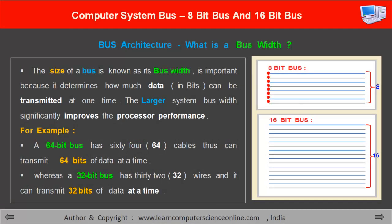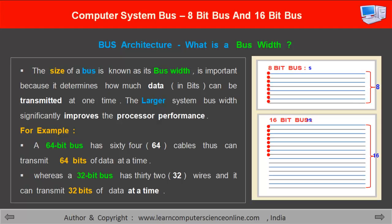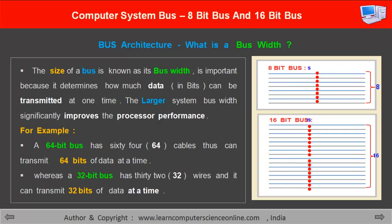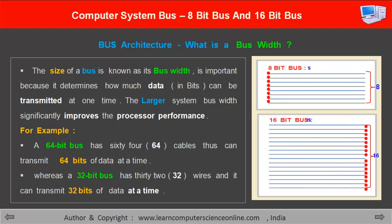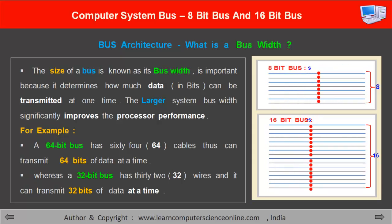This network of different types of buses used in the computer is called a bus system. The bus width is an important performance parameter because it determines how much data, in terms of bits, can be transmitted at one time. The larger the system bus width, the more data will be transferred, which significantly improves the microprocessor performance.